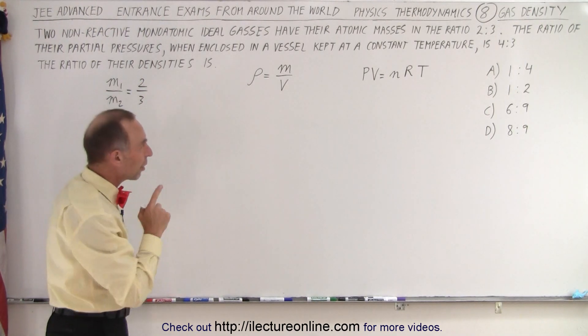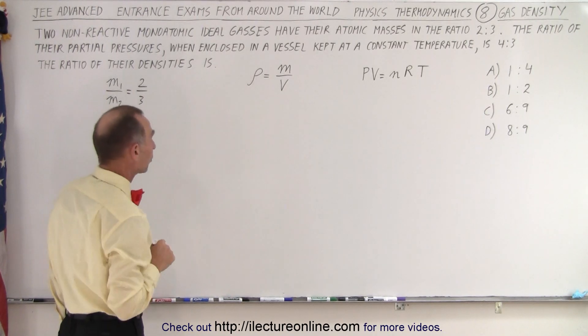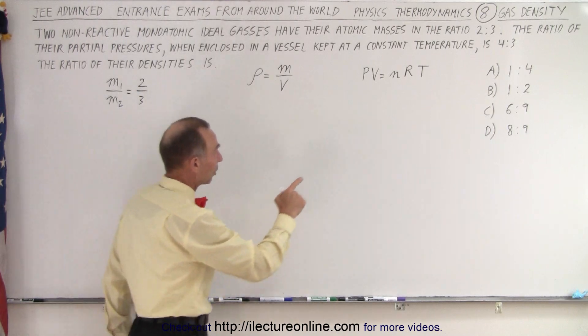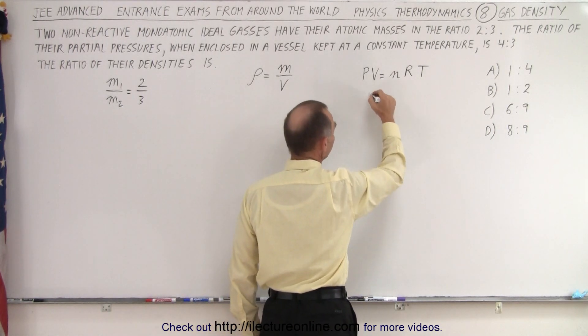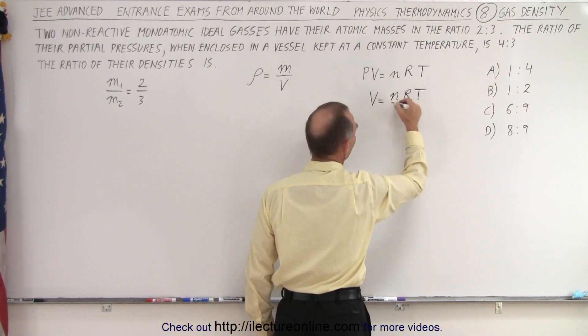Now we also need the ratio of their volumes. And the ratio of their volumes will depend upon their partial pressures. And we're given the ratio of their partial pressures. So let's solve this for volume. Volume is equal to nRT divided by P.